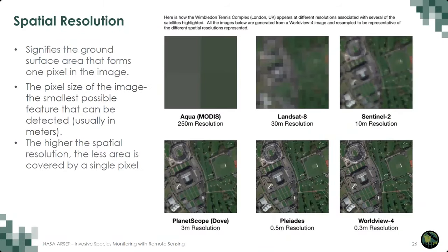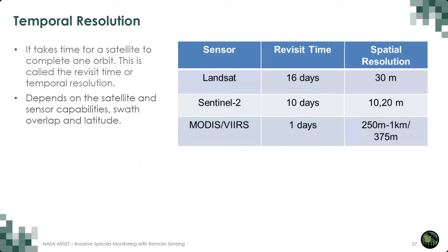Different sensors have different resolutions. Bands typically expand beyond the visible range into the infrared spectrum and sometimes into the ultraviolet spectrum. Notice the difference in bands between multispectral and hyperspectral sensors — hyperspectral having a higher resolution with more narrower bands present. Satellite imagery also varies in spatial resolution, which signifies the ground surface area that forms one pixel in the image. Satellites also take varying times to complete an orbit, called the revisit time or temporal resolution.